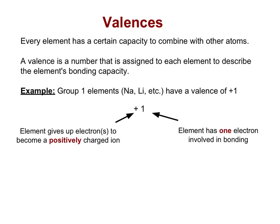In this video we will look at valences. Every element has a certain capacity to combine with other atoms. A valence is simply a number that's assigned to each element to describe the element's bonding capacity.